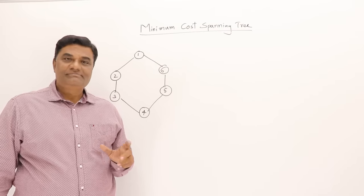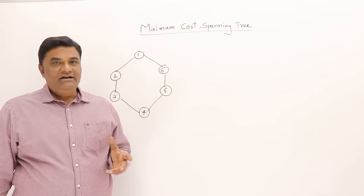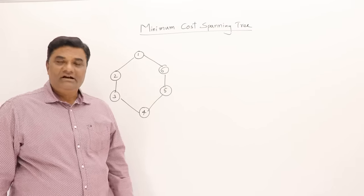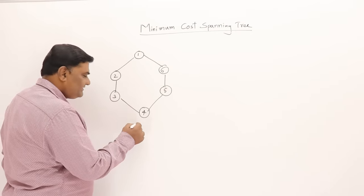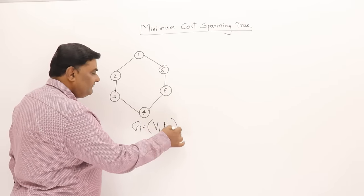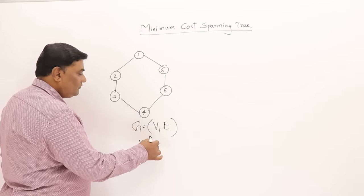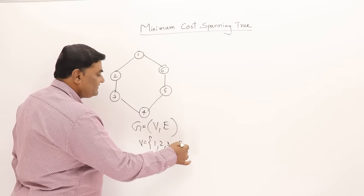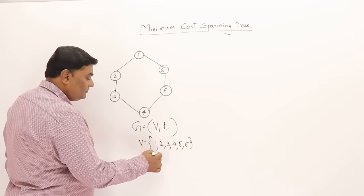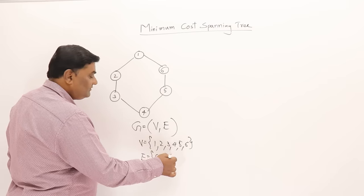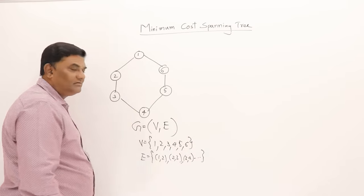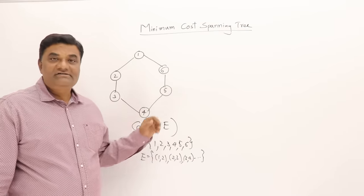The topic is minimum cost spanning tree. First of all, we'll understand what a spanning tree means. Here I have an example graph, represented as G with vertex set V and edge set E. V is the set of vertices 1, 2, 3, 4, 5, 6 and E is the set of edges — from 1 to 2, 2 to 3, 3 to 4, and so on. Graphs are represented as a set of vertices and edges.